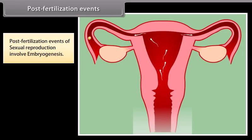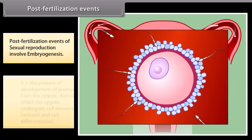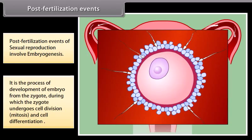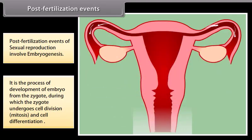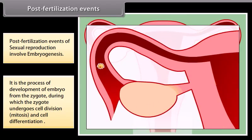Post-fertilization events of sexual reproduction involve embryogenesis, which is the process of development of an embryo from the zygote, during which the zygote undergoes cell division, mitosis, and cell differentiation, as shown in the diagram.